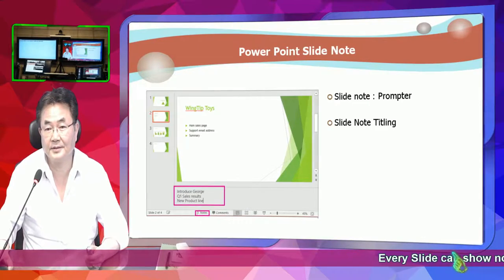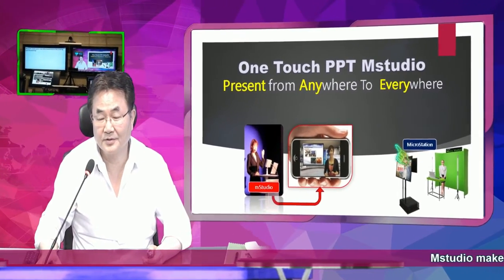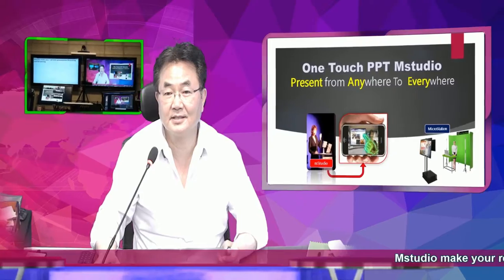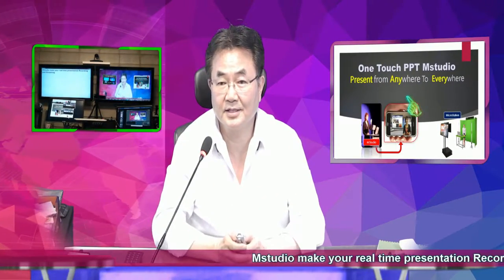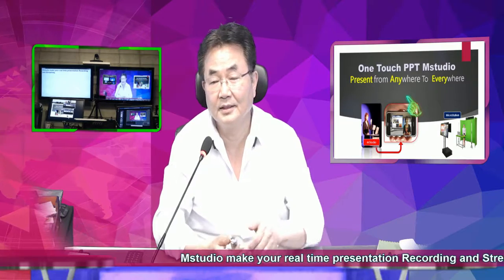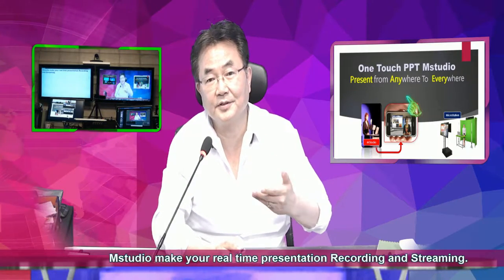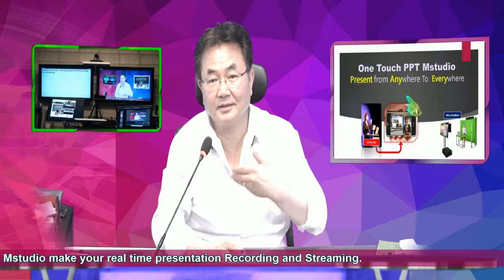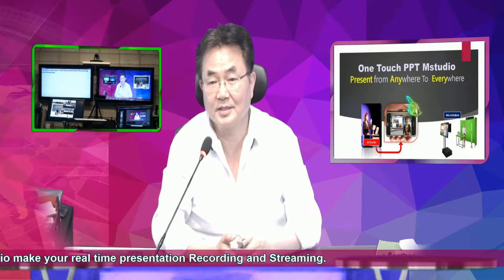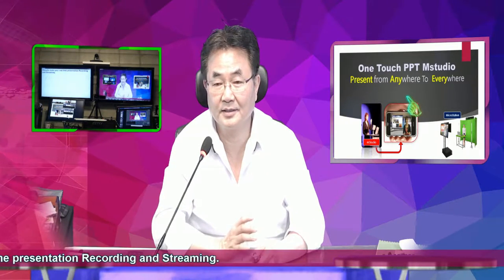So that's how MStudio works — we have a screen like this. All these scene changes are made automatic. When you speak continuously, the scene also automatically switches so it doesn't become a boring continuous scene.